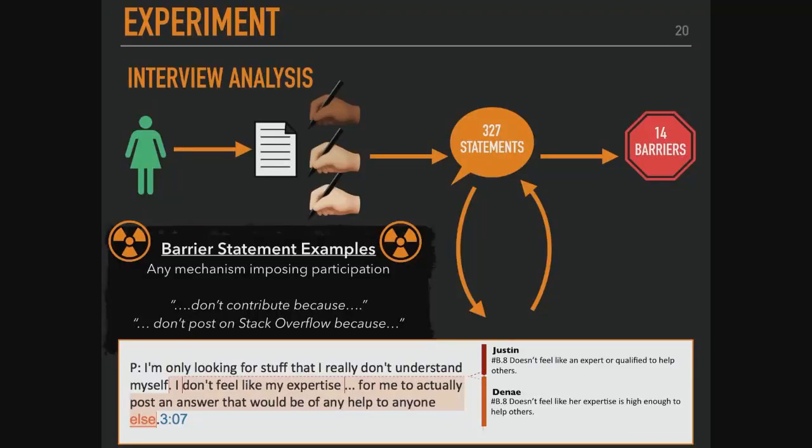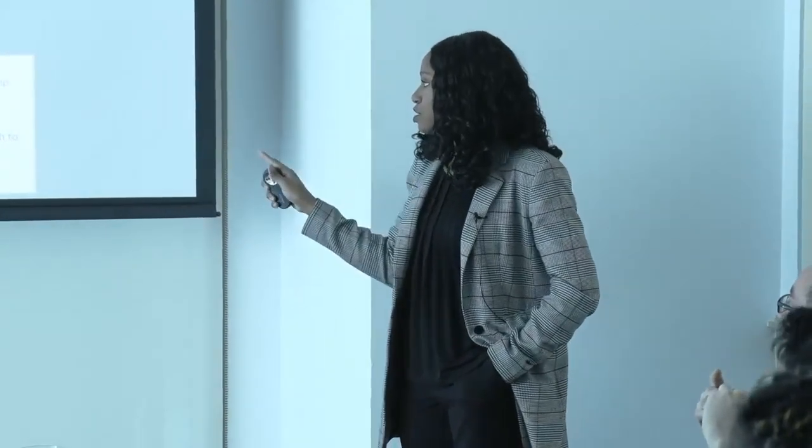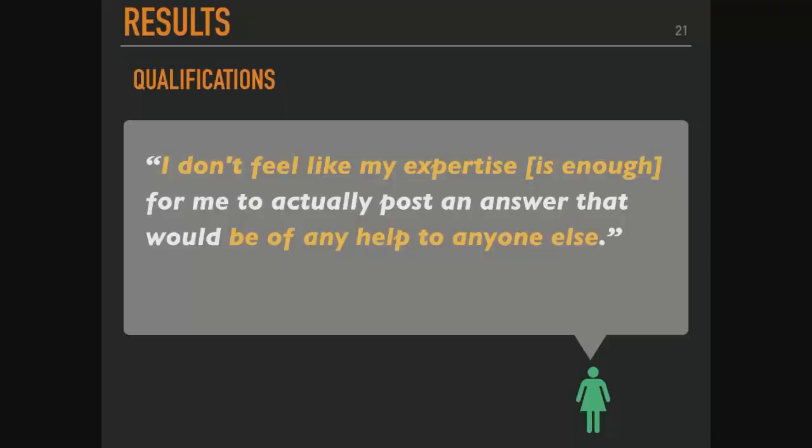Are these barriers to posting a question, an answer, or both? Both. From those 327 statements, we identified 14 barriers that exist across three categories. One is a 'muddy lens' perspective — misconceptions of how people should be using the community versus how they're actually using it. The second is a lack of interpersonal interactions — people not being able to identify the humanity in the person asking the question. The third is 'on-ramp roadblocks' — where people had every intention to post but were inhibited by some other force.